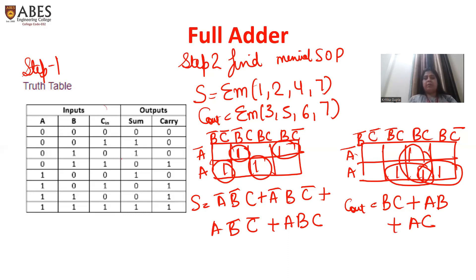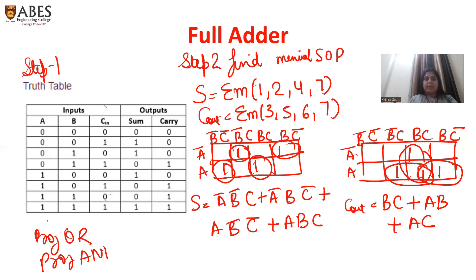Now step three is to design the circuit. For designing the circuit, we require a programmable OR gate and a programmable AND gate - both are programmable. This is the difference between a normal OR gate and the PLA OR gates and AND gates - that in PLA, the OR gate and AND gates are programmable. For designing the full adder using PLA, we require programmable OR and programmable AND gate.